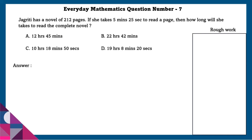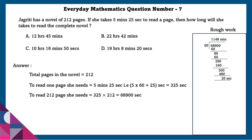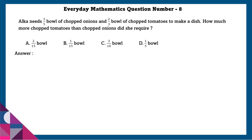Question 7: Jati has a novel of 212 pages. If she takes 5 minutes 25 seconds to read each page, how long will she take to read the complete novel? To read one page she needs 5 minutes 25 seconds, that is 325 seconds. To read 212 pages she needs 325 × 212 = 68,900 seconds. Dividing by 60 gives 1148 minutes with 20 seconds remainder. Dividing minutes by 60 gives 19 hours and 8 minutes remainder. Total time is 19 hours, 8 minutes, and 20 seconds.